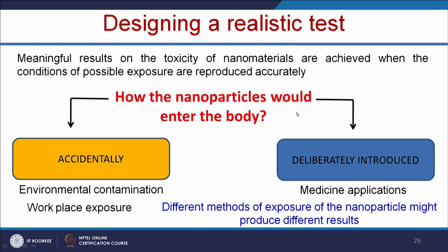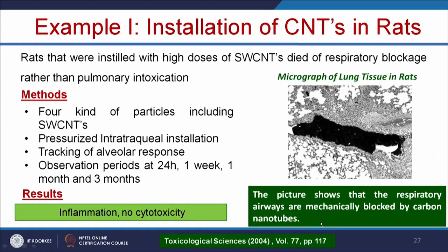Let us see how nanoparticles enter the body — first, accidentally, due to environmental contamination and workplace exposure; and second, deliberately introduced, through nanomedicine applications. Different methods of exposure might produce different results. For example, in the instillation of CNT in rats: rats instilled with high doses of single-walled carbon nanotubes died due to respiratory blockage rather than pulmonary intoxication. Using intratracheal instillation, the CNT was given to rats and observed at 24 hours, 1 week, 1 month, and 3 months. The result showed inflammation but no cytotoxicity — the respiratory airways were mechanically blocked by carbon nanotubes, causing death.